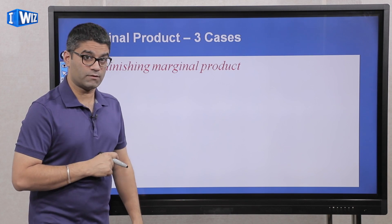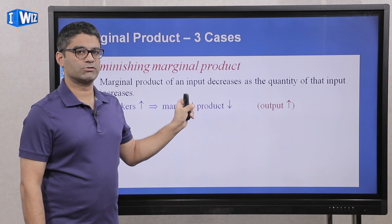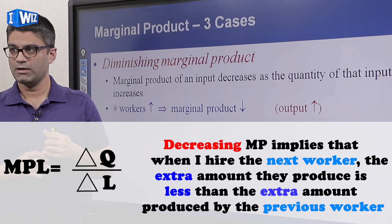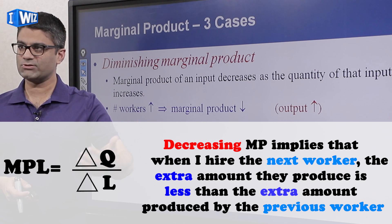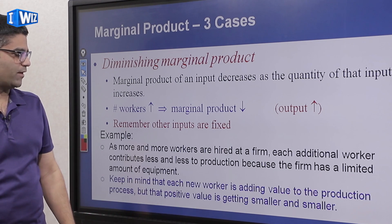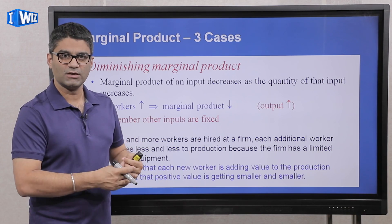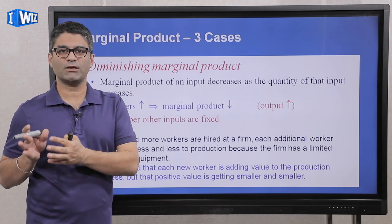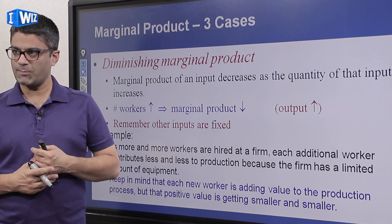The second case is diminishing marginal product of labor. If you hire more people they will produce more, but the additional amount they produce goes down. Each new worker is less productive than the previous one. This happens because other inputs are kept fixed — you only have one oven, two coffee machines, and a fixed amount of ingredients. Specialization can only go so far when other inputs are constrained, especially in the short run.